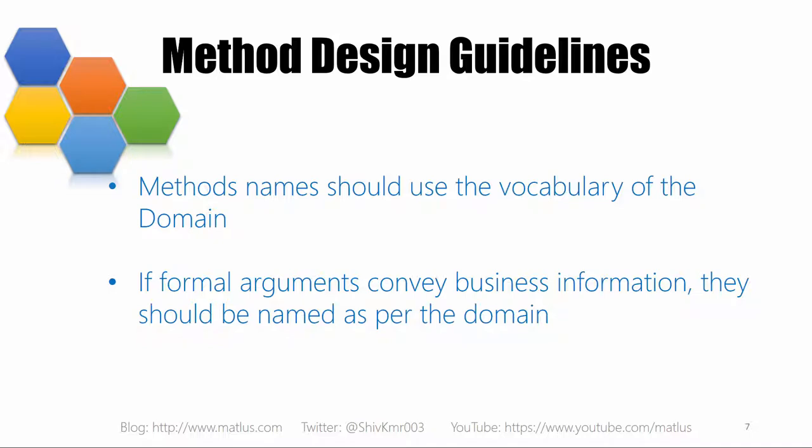Method names should always use the vocabulary of the business domain. By 'business' I don't necessarily mean a business system — it could be a game or whatever the software is doing. Class names, method names, formal argument names, local variable names — all of these should follow the language of the domain. That's important because then if you're working with analysts or customers directly, you can have the same language and your code is reflecting exactly what you're learning about the business.